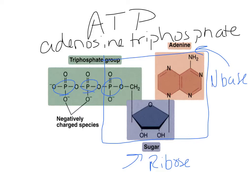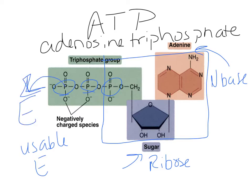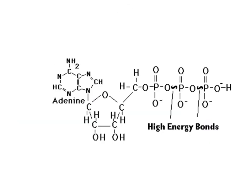ATP is what we think of as our usable energy — our chemical energy that can easily be utilized. It releases energy when a phosphate is removed. Respiration actually fuels the formation of ATP. Remember, ATP is relatively unstable and can only be used for short-term energy storage.